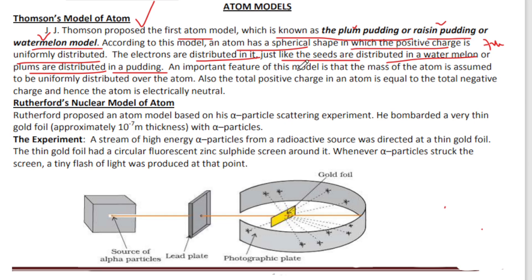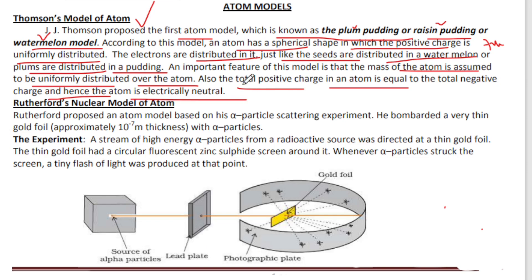An important feature of this model is that the mass of the atom is assumed to be uniformly distributed over the atom. Also, the total positive charge of the atom is equal to the total negative charge, making the atom electrically neutral.